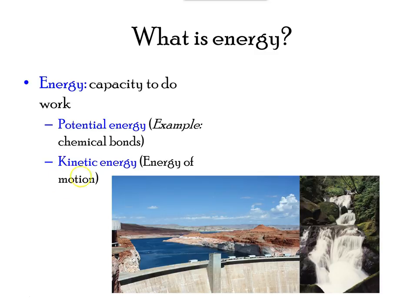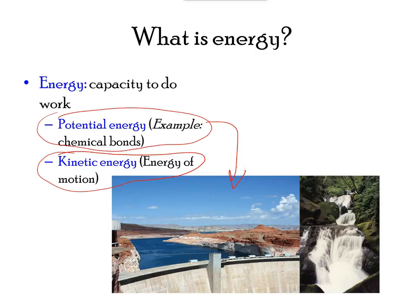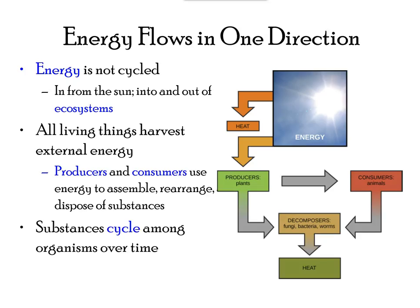Energy associated with objects in motion is called kinetic energy. Energy associated with position is called potential energy. Ultimately, most life forms get their energy from the sun. Plants use photosynthesis to capture sunlight and herbivores eat the plants to obtain energy. Herbivores are eaten by carnivores, and eventually decomposition of plant and animal material contributes to the nutrient pool.